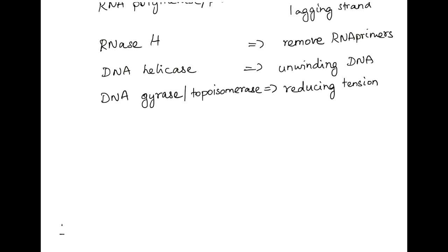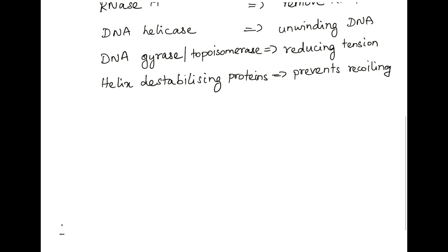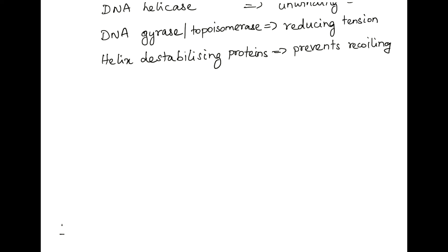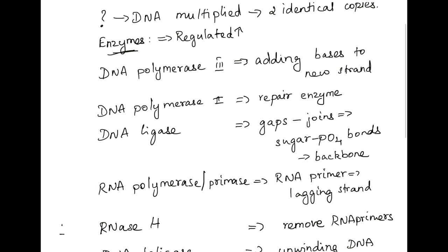And once the DNA is unwound and the tension is also reduced, it is very possible that the helical nature of the DNA is such that it will try to rewind immediately. So to stop it from rewinding, it will be bound by certain proteins which are called helix destabilizing proteins. This helix destabilizing protein will prevent DNA recoiling. Thus, these are the various enzymes that are involved in DNA replication.